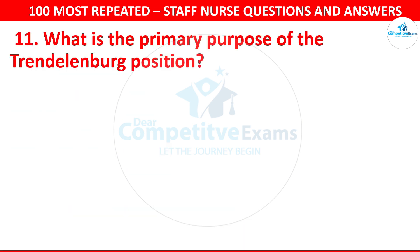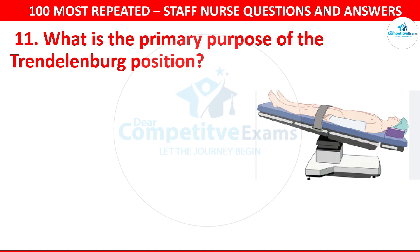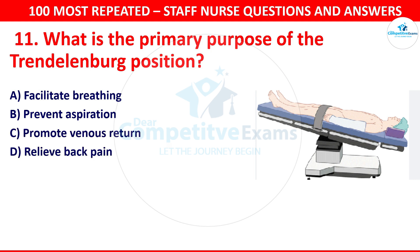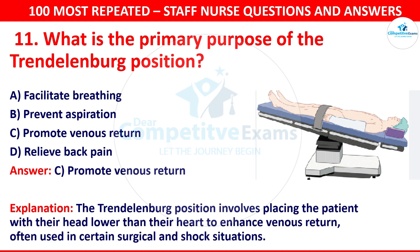Question 12. What is the primary purpose of the Trendelenburg position? Your options are facilitate breathing, prevent aspiration, promote venous return or relieve back pain. The correct answer is promote venous return. The Trendelenburg position involves placing the patient with their head lower than their heart to enhance venous return, often used in certain surgical and shock situations.